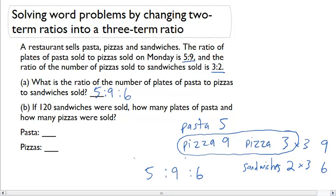Now the second part says if 120 sandwiches were sold, how many plates of pasta and how many pizzas were sold? Well, now I can use this ratio that I have of 5:9:6 and I can find an equivalent ratio.